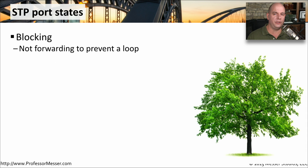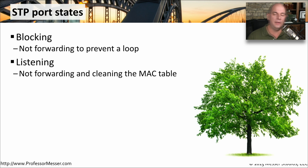When you turn on spanning tree on a switch, it may set your interfaces for particular characteristics. One of those may be to set the interface for blocking, which means no traffic is going to go in or out of that particular interface. If spanning tree is just starting or needs to converge, then it may go into a listening mode where the MAC address table is cleared out and it begins listening to see what MAC addresses might be communicating through a particular interface.